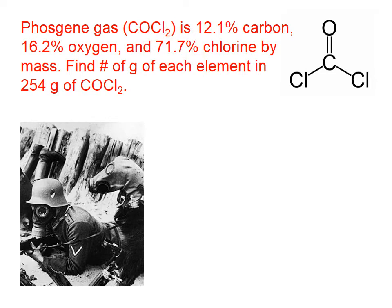That's because atoms of oxygen, carbon, and chlorine don't weigh the same. So by mass, phosgene is 71.7% chlorine, whereas in terms of number of atoms, it would only be 50%.